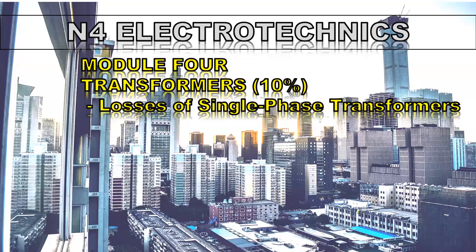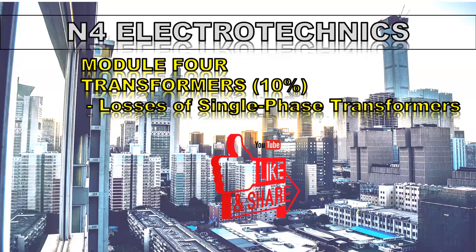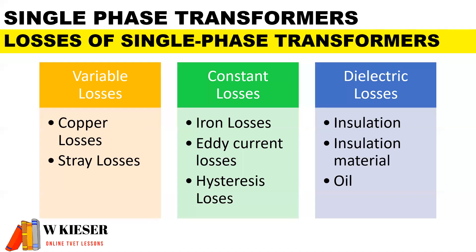Welcome to this video for N4 Electro-Techniques. In this video we'll be looking at the different types of losses found in single-phase transformers. The different categories of losses are variable losses, constant losses, and dielectric losses.